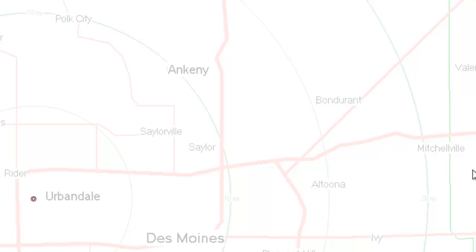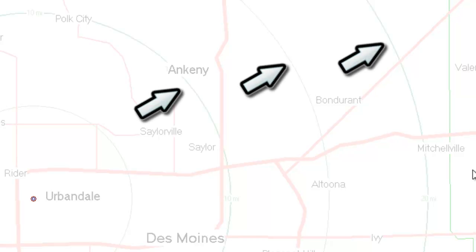Keep in mind each map is custom drawn for your specific territory. The light green circular rings, called range lines, extend from your headquarters location and give approximate, as the crow flies, mileage markers.